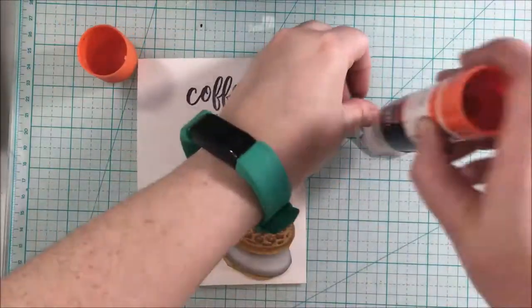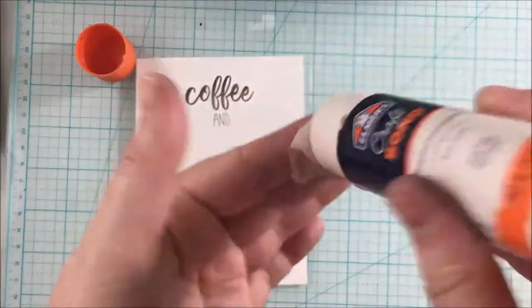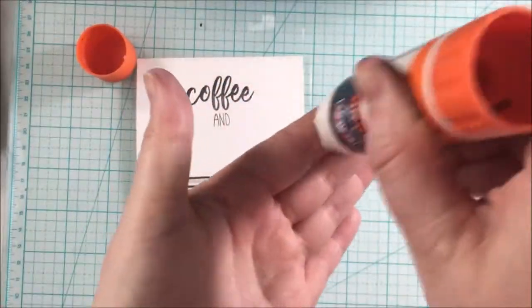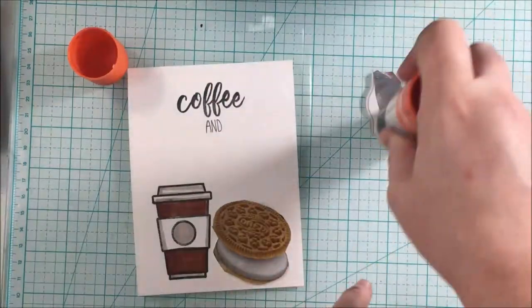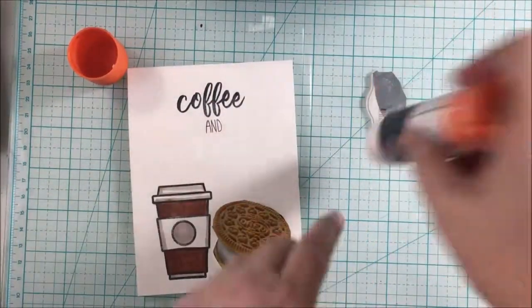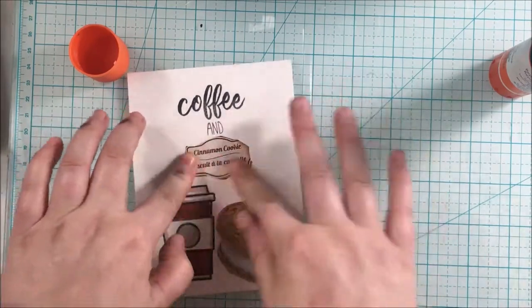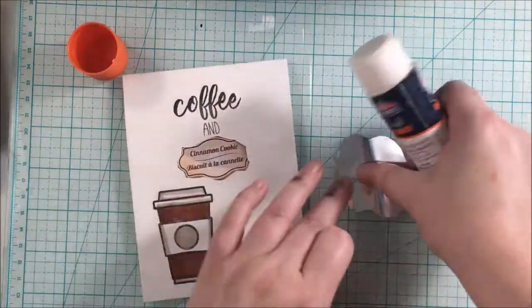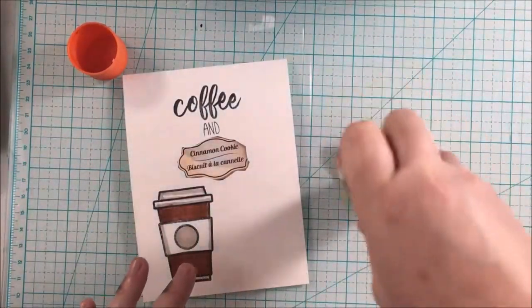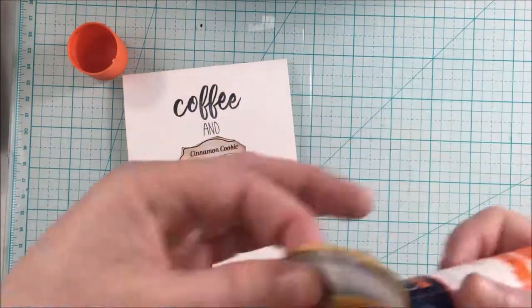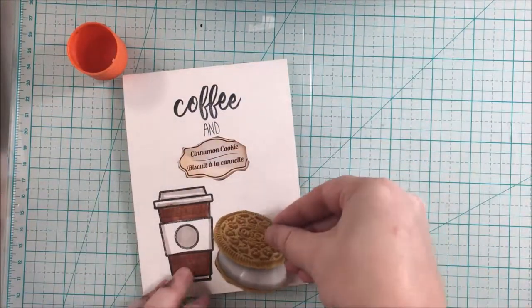Then I ended up just using a glue stick to adhere the pieces from the Oreo packaging.